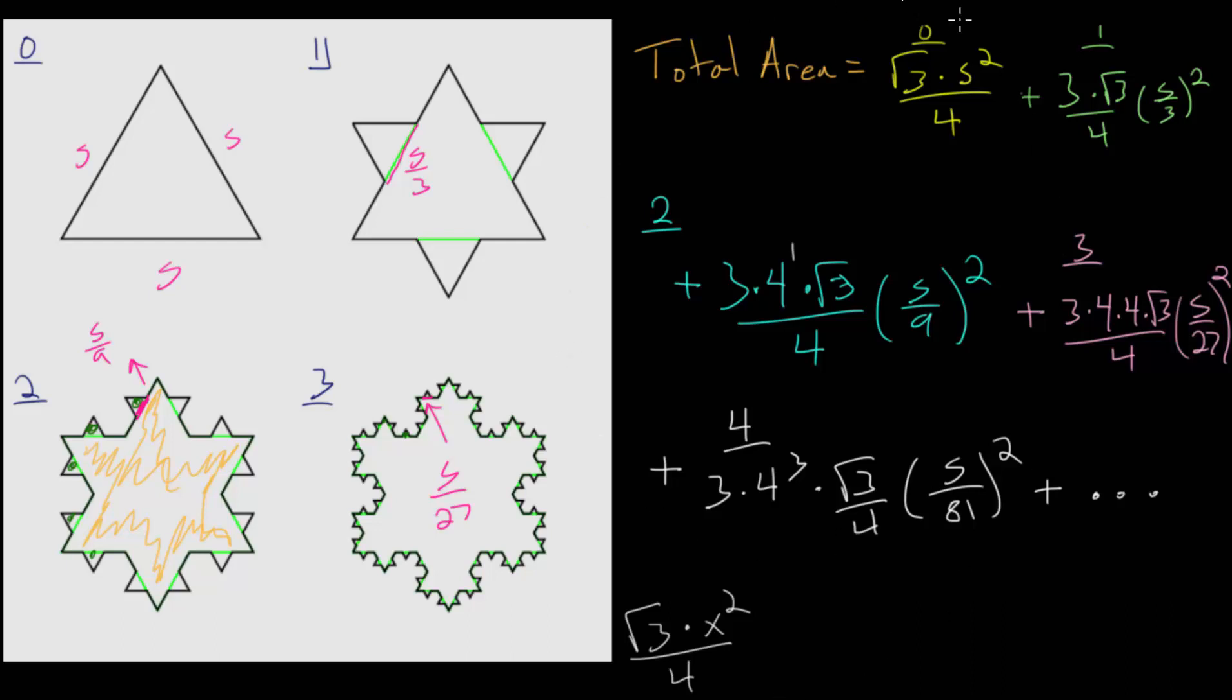In the last video we found a formula for the area of the Koch snowflake and we were able to write it as this infinitely long sum. We are adding up an infinite amount of terms, and for this video we can simplify this and try to make sense of it.